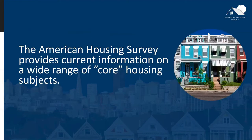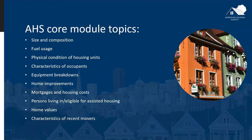The American Housing Survey provides current information on a wide range of core housing topics included in every survey, such as the size and composition of the nation's housing inventory, vacancies, heating and cooking fuel usage, the physical condition of housing units, characteristics of occupants, equipment breakdowns, home improvements, mortgages and other housing costs, persons living in or eligible for assisted housing, home values, and characteristics of recent movers.